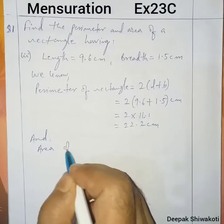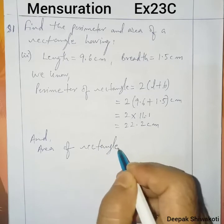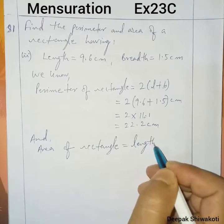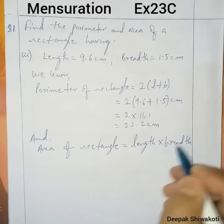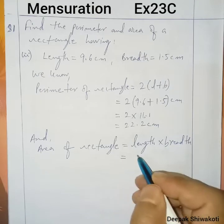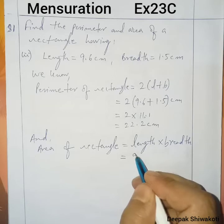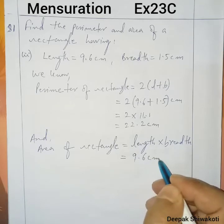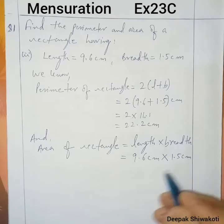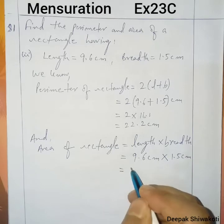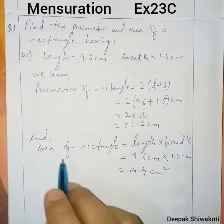That equals 22.2 centimeter. Now we have to find the area also. Area of a rectangle is equal to length into breadth — these formulas are very simple to remember. So length is 9.6 centimeter and breadth is 1.5 centimeter. When we multiply we get 14.4 centimeter square as the area of the rectangle.